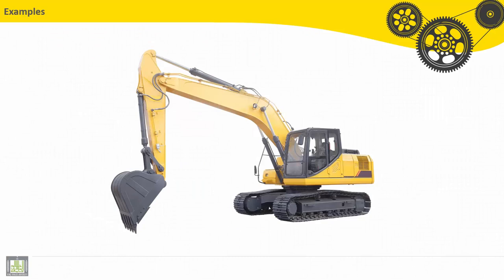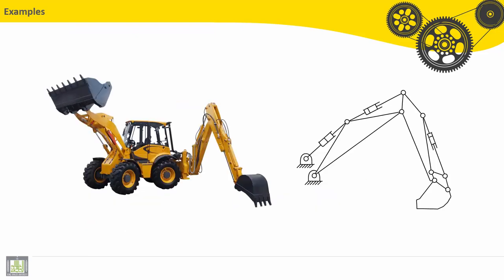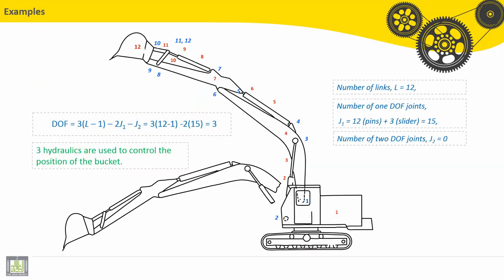We will take an example here for a bulldozer. Here we have a mechanism and here also we have another mechanism. Let's take the example to calculate degree of freedom or mobility. The formula is 3(L-1) - 2J1 - 2J2.